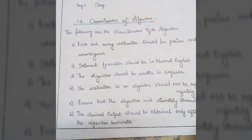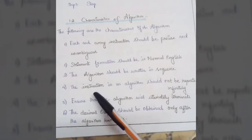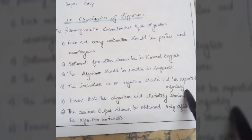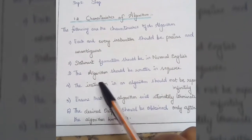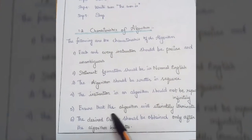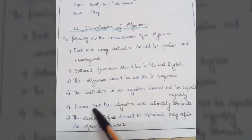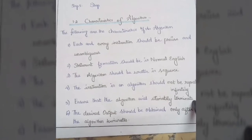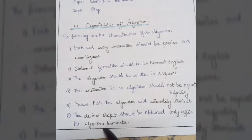Every algorithm has to be written in normal English. It has to be in sequence. The instructions of an algorithm should not be repeated infinitely — instructions should not be repeated. The next point is: the algorithm should ensure it will terminate ultimately. Every algorithm should have a termination step.